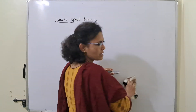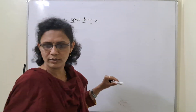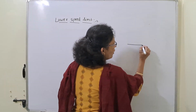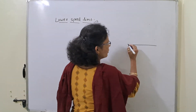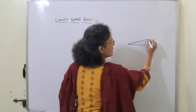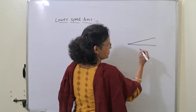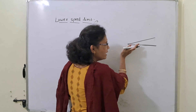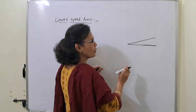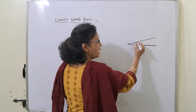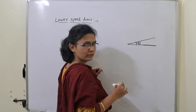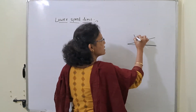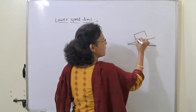To begin, let me draw a diagram. We have a horizontal road, and the banked road is inclined at angle theta with the horizontal. We will consider one vehicle on this banked surface.